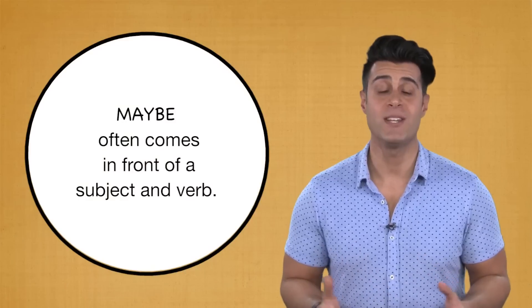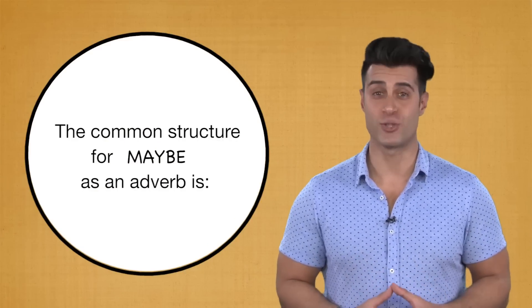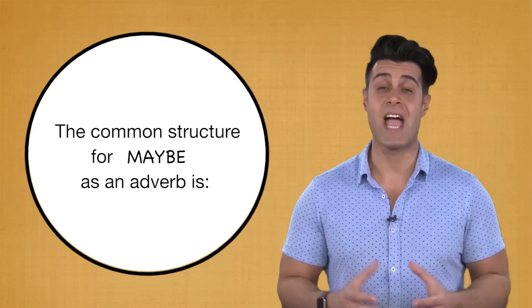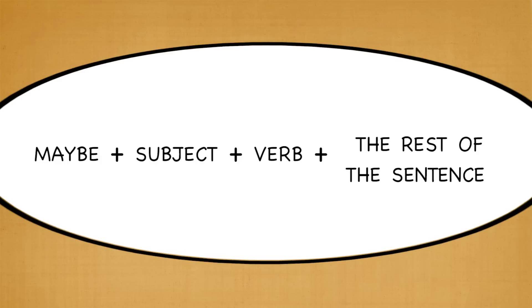Maybe often comes in front of a subject and verb. The common structure for maybe as an adverb is maybe plus subject plus verb plus the rest of the sentence.